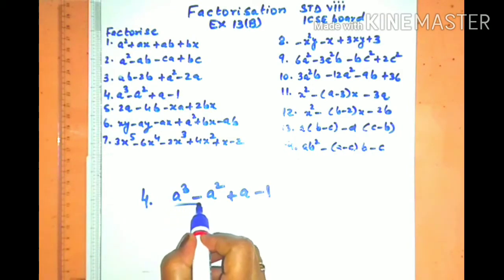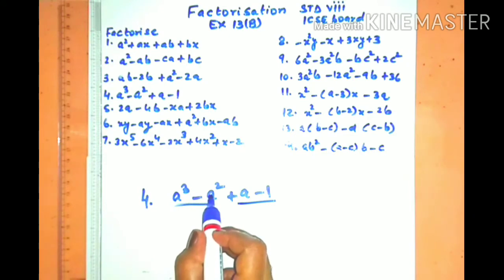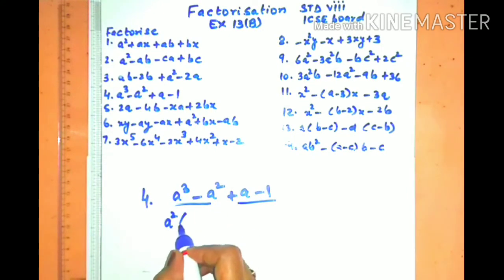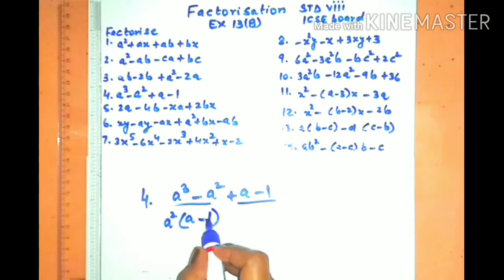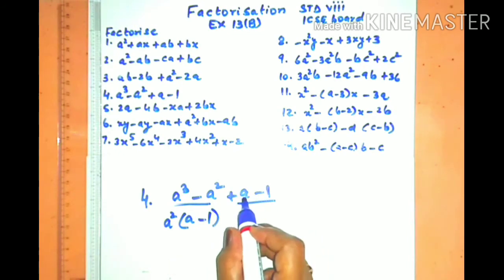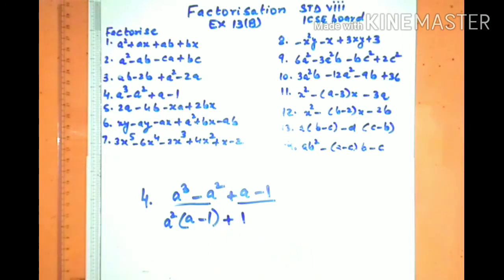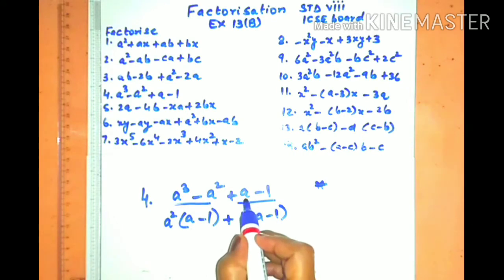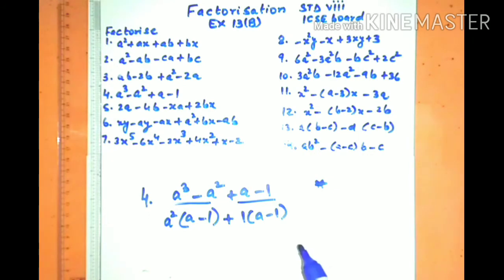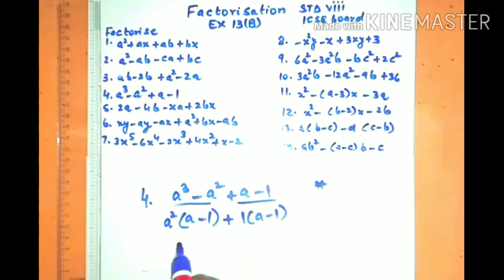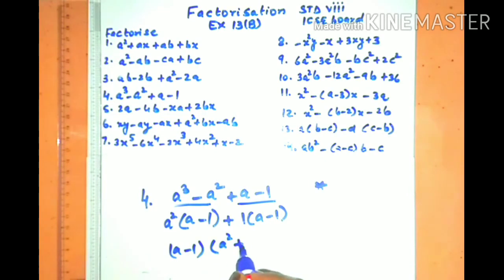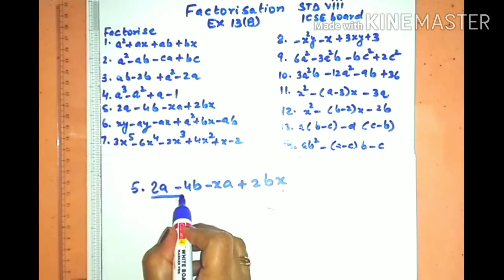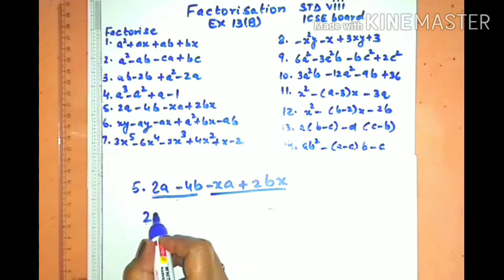In sum number four, we make pairs. From the first pair, a² is the lowest common factor, so we take a² out and what remains is a. Since a² is fully taken out, we write 1 here because a² × 1 = a². From the second pair, there is nothing common, so we write 1 as the common factor — that is the second tip: whenever nothing is common, write 1 as the common factor. Now both terms have (a − 1) as common, and the remaining bracket is (a² + 1).